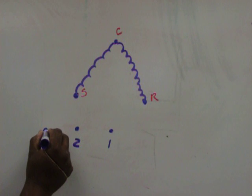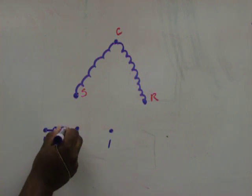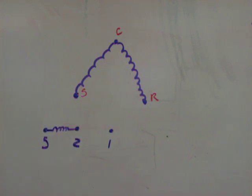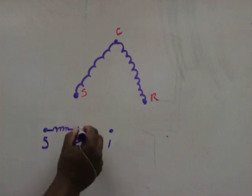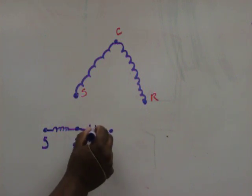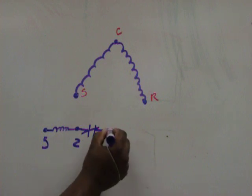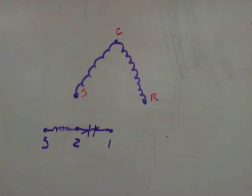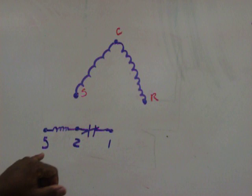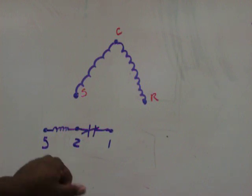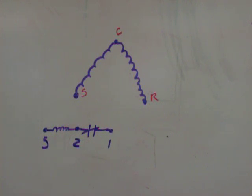In between five and two is your coil for the relay. Between two and one is a normally closed set of contacts. Remember that. Between five and two is your coil. Between two and one is your normally closed set of contacts.